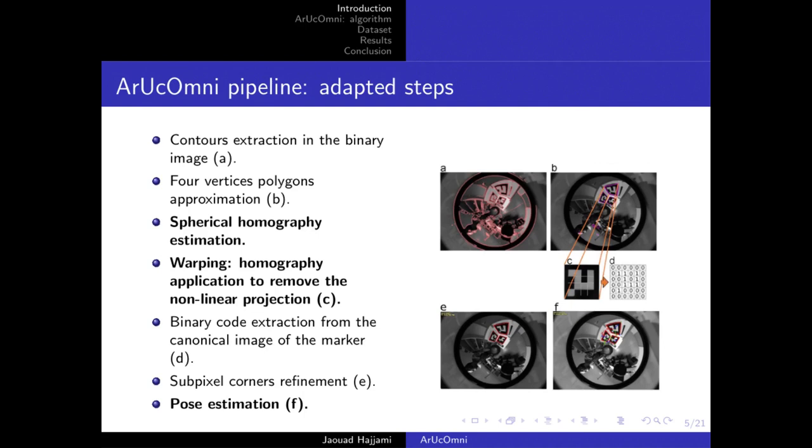In AruCo Omni we focused on three key steps to detect markers on panoramic images: homography estimation to get the canonical form of the potential marker, homography application to remove the non-linear projection, and finally pose estimation. All these steps are formalized on the sphere of the unified central projection model.